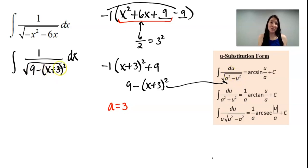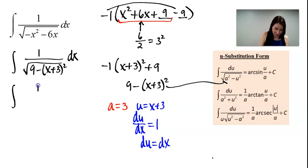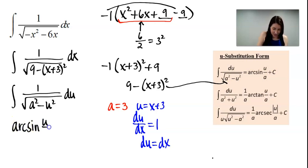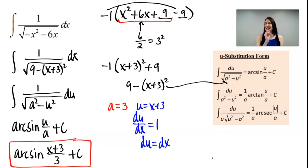Furthermore, u squared is (x plus 3) squared, so u equals x plus 3. Taking the derivative of both sides with respect to x, du simply substitutes for dx. So I can rewrite this integral as 1 over the square root of a squared minus u squared, du — which looks exactly like the arc sine substitution form. To integrate it, we get arc sine of u over a plus C. Substituting back in, our final answer is arc sine of (x plus 3) divided by 3, plus C. And that is how you solve this indefinite integral that looks tricky at first.